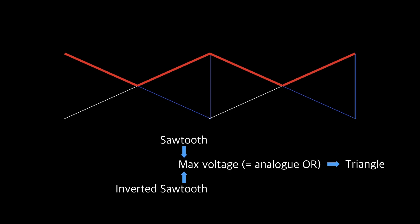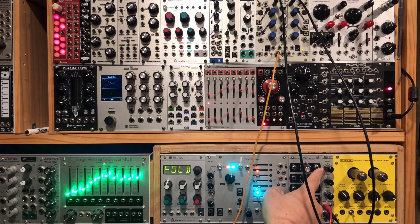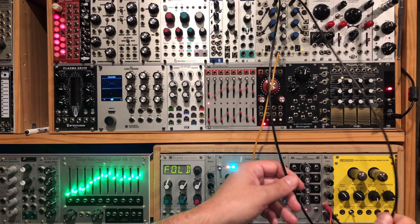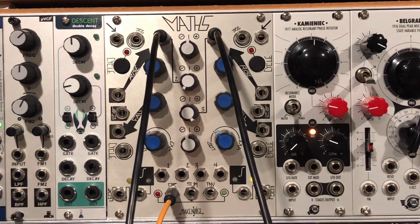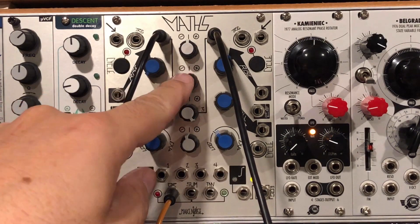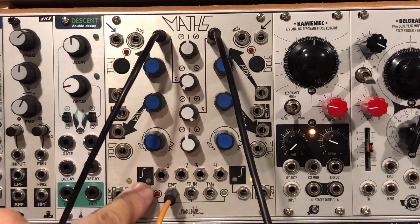First of all, since the saw we produced earlier will probably have a DC offset, we run it through an attenuator and offset to get it into the right voltage range. Then we take two copies and in this example patch them into channels two and three of Maths. Other companies such as Doepfer and Erika make max/min or analog logic modules, but the nice thing about Maths is that it can also invert one of the sawtooths for you. Then you take the maximum voltage out of the OR output.